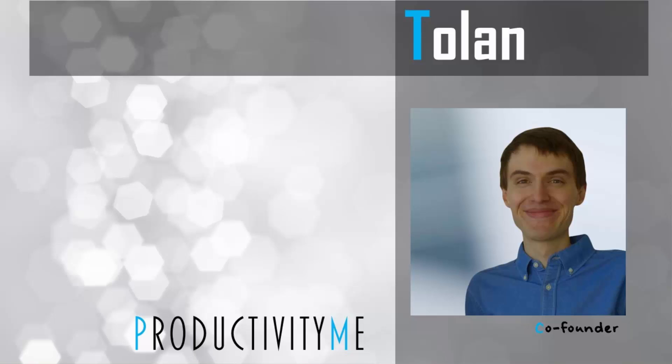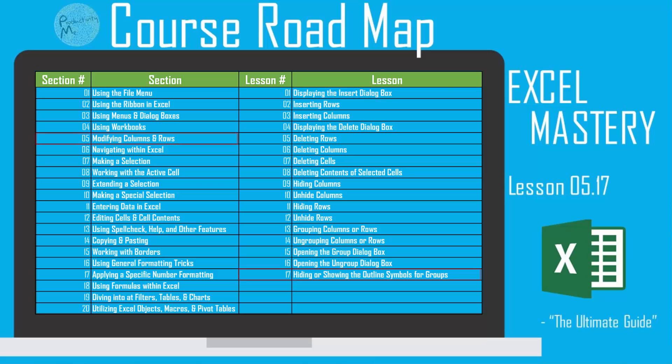Hi and welcome! My name is Tolan and I'm the co-founder of ProductivityMe. In this video, we're going to look at how to hide or show the outline symbols within Microsoft Excel for groups. We'll achieve this by using the keyboard shortcut Ctrl+8. So, with that, let's get started.